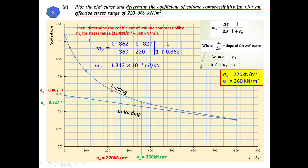What we need to do now is determine the coefficient of volume compressibility mv for an effective stress range of 220 to 360 kN/m². The equation for volume compressibility uses delta e over delta stress, multiplied by 1 over (1 + e₀), where e₀ refers to the initial value at the start of the stress range. So e₀ corresponds to the smaller stress value of 220 kN/m², and stress one is 360 kN/m².